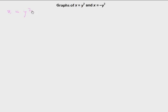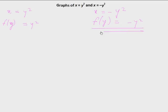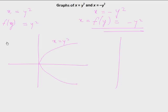Let's look at x = y² and x = -y². In this case, this is not a function of x — it's a function of y, where x is the dependent variable and y is the independent variable. You just switch the roles of x and y, so the graphs also switch around. This gives the graph of x = y² and x = -y², where the x and y axes have switched their roles.